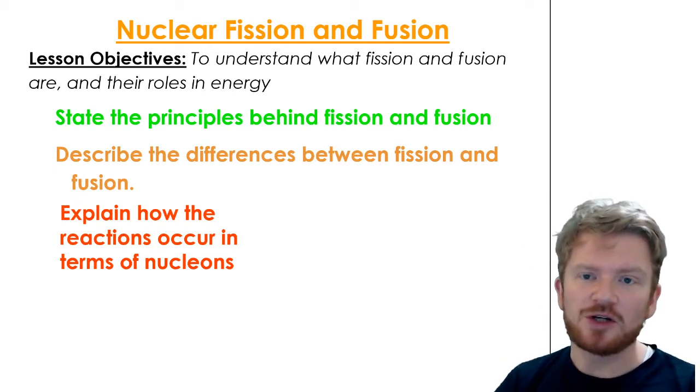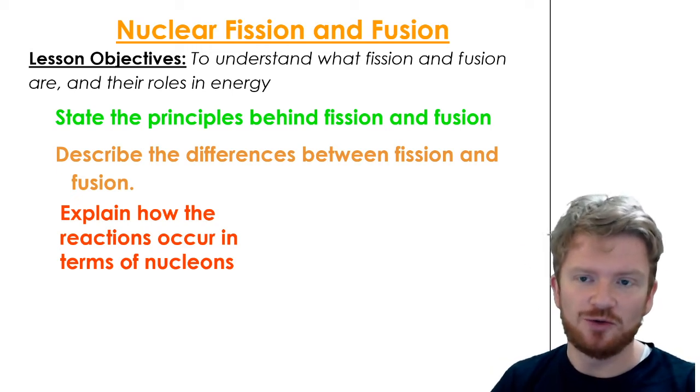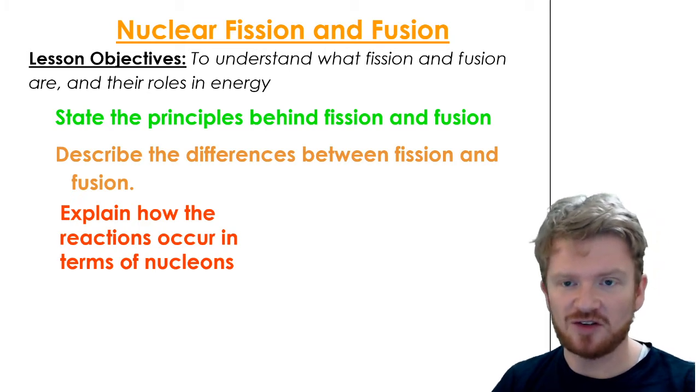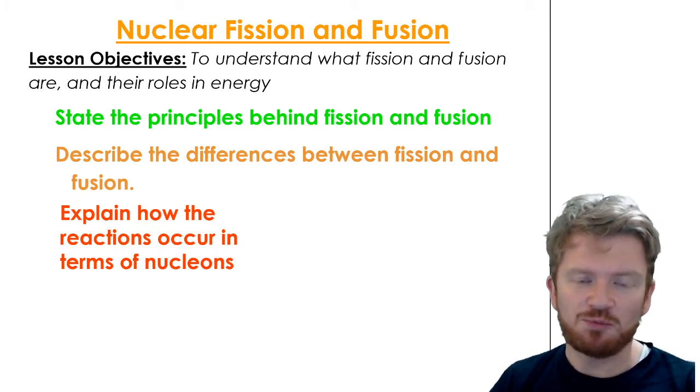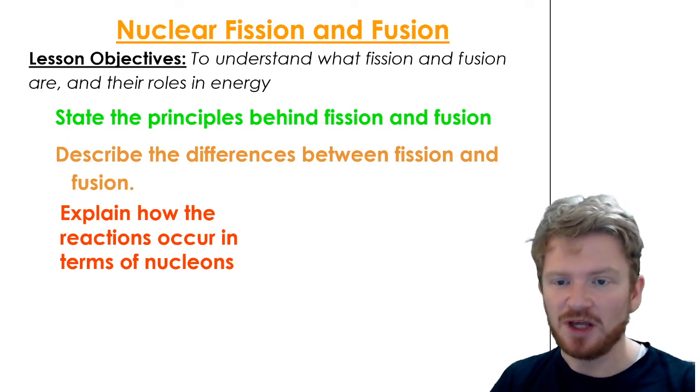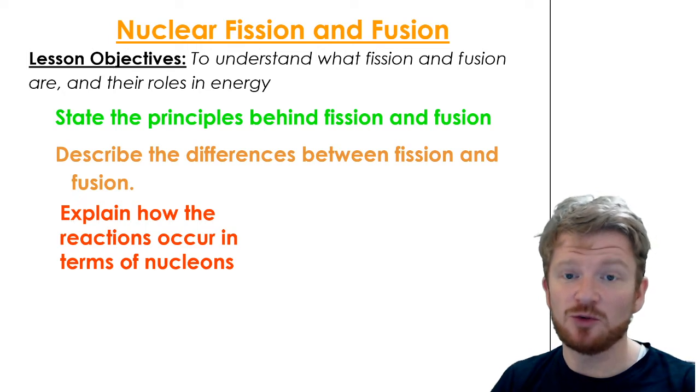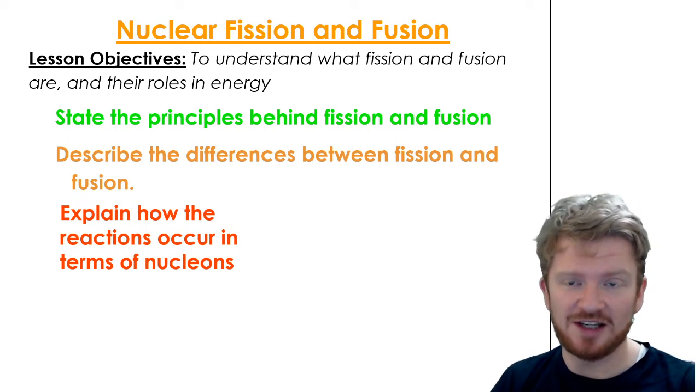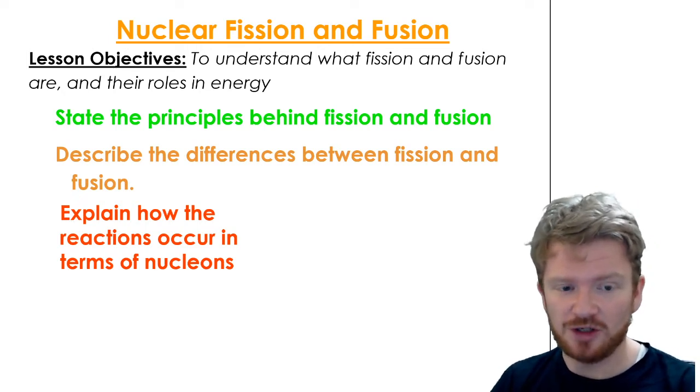Okay everybody, in this video we're going to go through fission and fusion for your CIE IGCSE physics course. So what you basically need to know is the idea of what actually happens during fission and fusion, you need to know the differences between them and we'll think about some stuff in terms of the actual nucleons themselves and what happens there inside the nucleus.